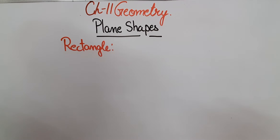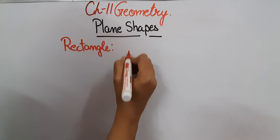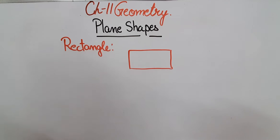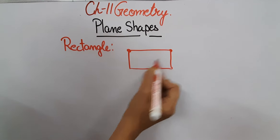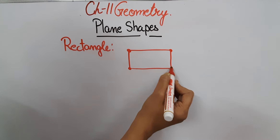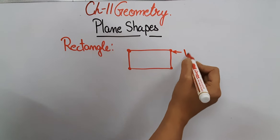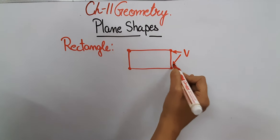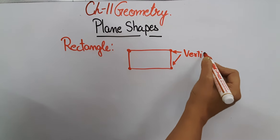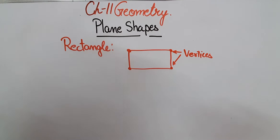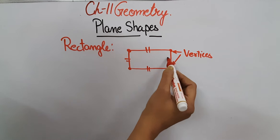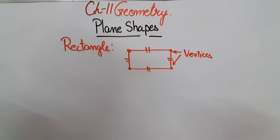First of all we will see a rectangle. This is how it looks. A rectangle has four corners — one, two, three, and four. These are also known as vertices, or vertex in singular. So these are the vertices or corners. It also has four sides because it is made up of four line segments.